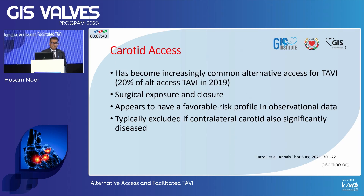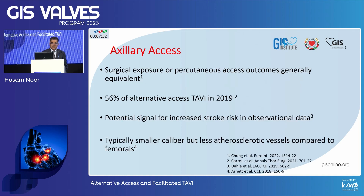Carotid access has become more common in the U.S., about 20%. It is done mainly surgically and appears to have a favorable risk profile in observational data, typically excluded if the contralateral carotid is also significantly diseased. The axillary access, which can be done either surgically or percutaneously, is 56% — the majority shareholder in TAVI across the United States in 2019. There is a potential signal for increased stroke in observational data; it is typically smaller caliber but less atherosclerotic compared to the femorals.